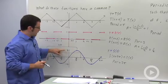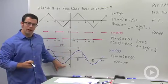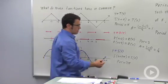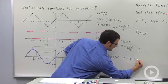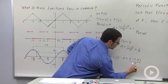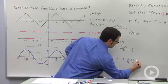And here, the maximum value is 3, the minimum value is negative 3. 3 minus negative 3 over 2 is 6 over 2, which is 3.